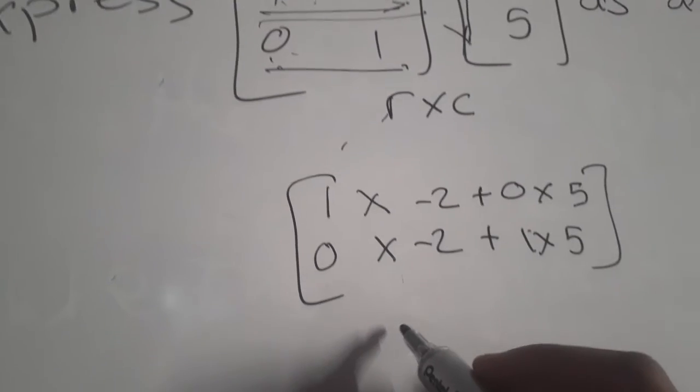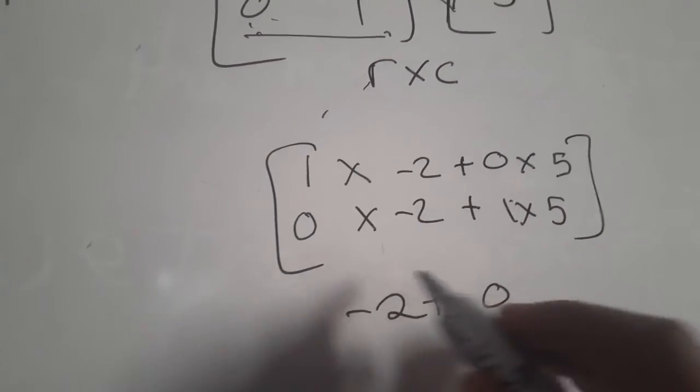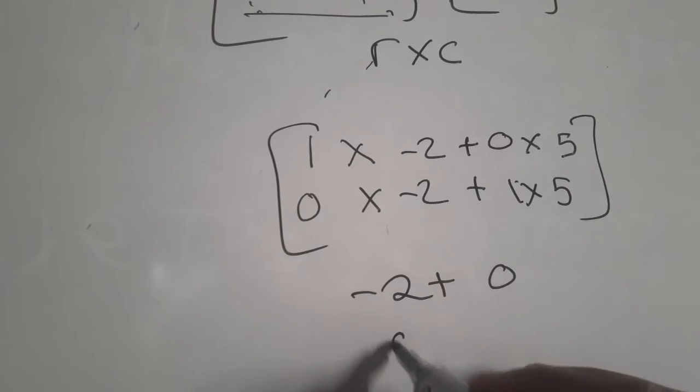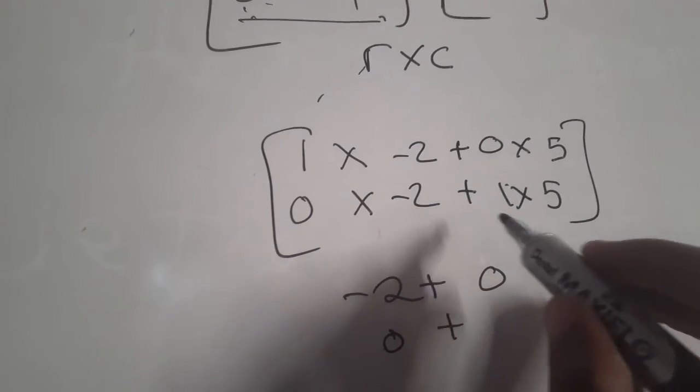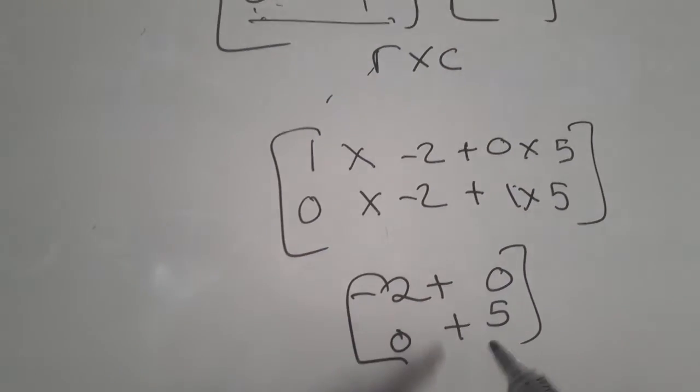So one times negative two is negative two, plus zero times five which is zero. Zero times negative two is zero, plus five times one which is five.